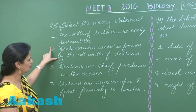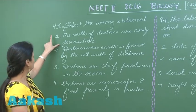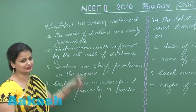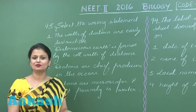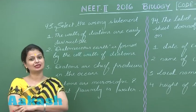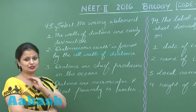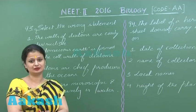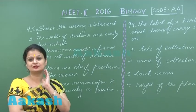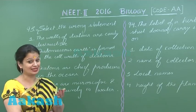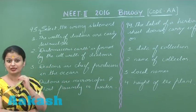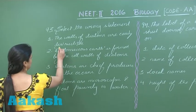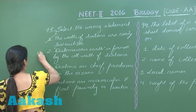Diatomaceous earth is formed from the cell walls of diatoms — that's right. Now coming to option 1: the walls of diatoms are described as destructible. However, the walls of diatoms are actually indestructible, and this indestructible nature is due to the presence of silica. After billions of years, deposits of silica result in the formation of diatomaceous earth, also known as diatomite. So in option number 1, instead of 'destructible,' it should be 'indestructible.'